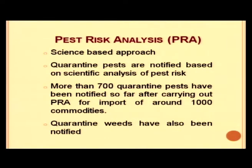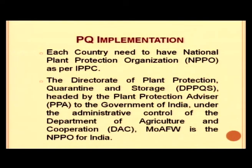The scientific part of the PQ Order involves pest risk analysis, a science-based approach. Quarantine pests are notified based on scientific analysis of pest risk. More than 700 quarantine pests have been notified so far after carrying out PRA for import of around 1,000 commodities. Quarantine weeds have also been notified under this PRA process.